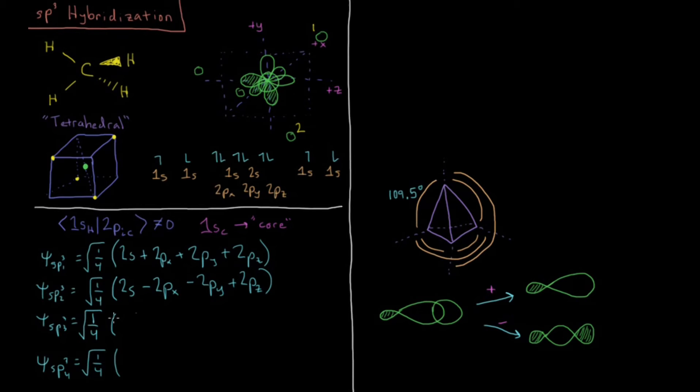And then for number 3, we have 2s plus 2px minus 2py minus 2pz. So we go plus x, go minus y, and we go minus z, which is this one over here in the back. So we'll label that as number 3.